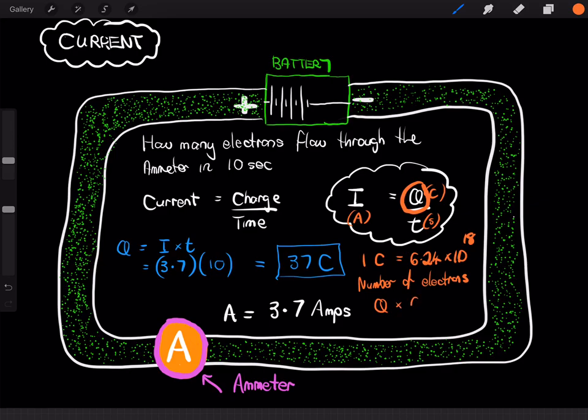And, in this case, it's 37 Coulombs of charge, multiplied by 6.24 times 10 to the power of 18.